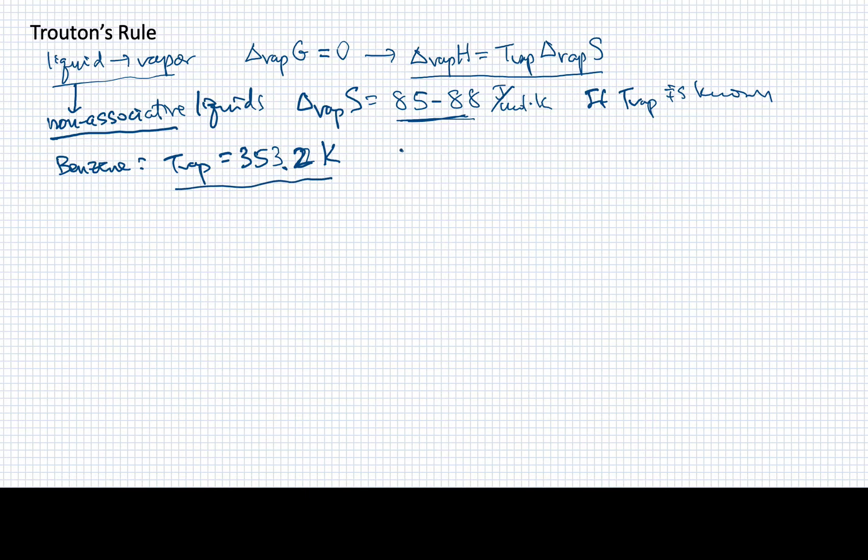So that would lead us to estimate the enthalpy of vaporization for benzene to be something on the order—let's take 88 just for fun. So 88 joules per mole Kelvin multiplied by the temperature of vaporization, 353.2 Kelvin. So the Kelvins will cancel, and I'll have joules per mole. And if I then convert that into kilojoules per mole, I'll get a figure that's about 31.1 kilojoules per mole.